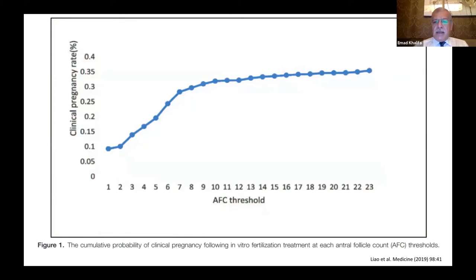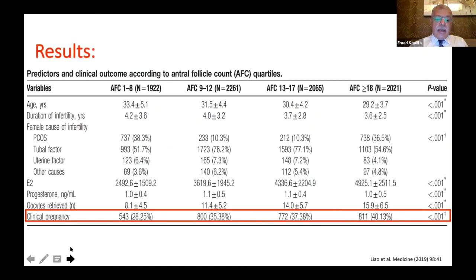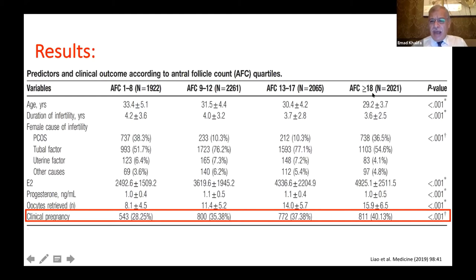The best antral follicle count target is around 15. After 15 follicles, there is still a slow increase in pregnancy rate up to about 20–25 follicles, then a plateau. However, more than 15 follicles yields a higher cumulative pregnancy rate because of greater opportunity for oocyte freezing. With AFC grouped as 1–8, 9–12, 13–17, and over 18, pregnancy rate increases progressively from 28% up to 40%.